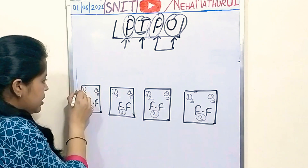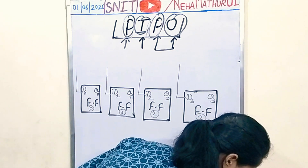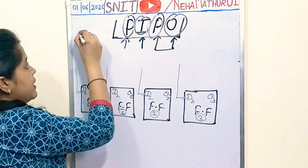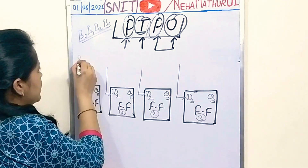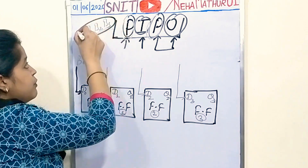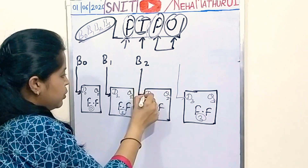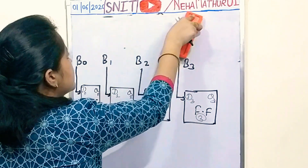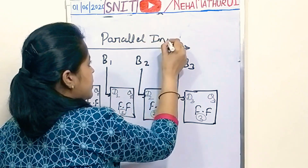So this is your first input, second input, third input, and fourth input — D0, D1, D2, and D3. These are 4 inputs for your 4-bit data B0, B1, B2, and B3. Your 4-bit data is applied such that B0 goes to D0 input of flip-flop 0, B1 goes here, B2 goes here, and B3 goes here. So now you are applying your 4-bit binary data in parallel form. This is the parallel input data.